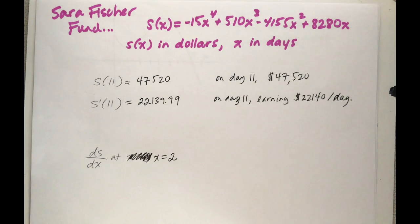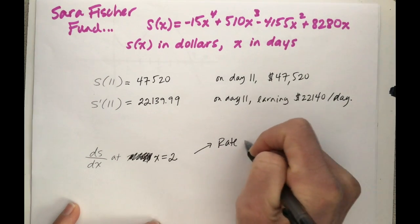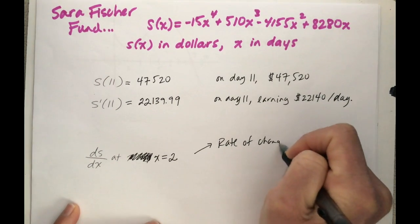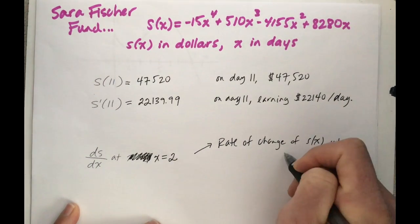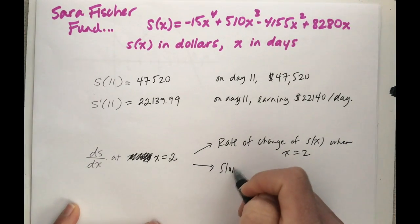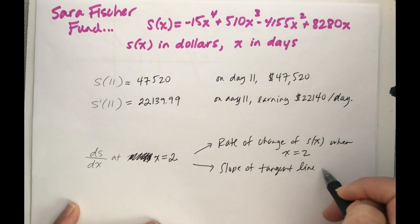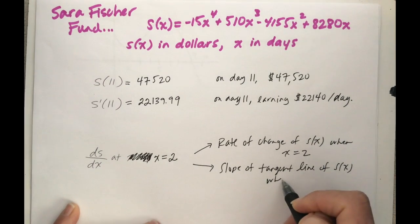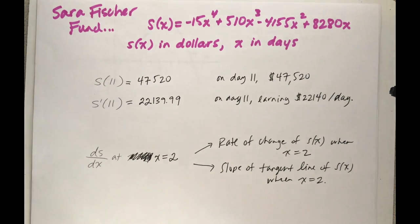Now I just want to throw out some more notation and practice here. The ds/dx at x equals 2. I could read this in two ways: this is asking for the rate of change of s(x) when x equals 2. In other words, this is asking for the slope of the tangent line of s(x) when x equals 2.